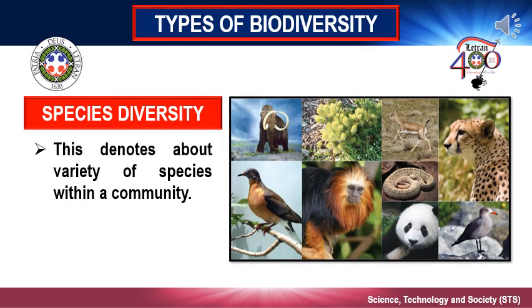Next, Species Diversity. Species diversity is defined as the number of species and the abundance of each species that live in a particular location. The number of species that live in a certain location is called species richness. If you were to measure the species richness of a forest, you might find 20 bird species, 50 plant species, and 10 mammal species. Abundance is the number of individuals of each species — for example, there might be 100 monkeys that live in a forest. We can talk about species diversity on a small scale like a forest or a large scale like the total diversity of species living on Earth.